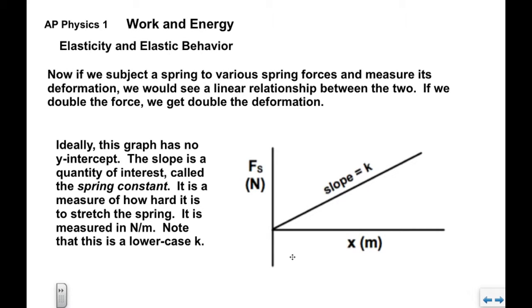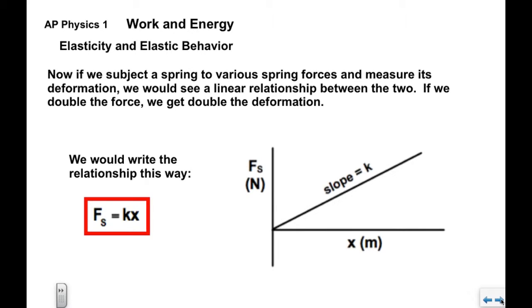The slope of this graph is actually a quantity of interest. It's called the spring constant. It's a measure of effectively how hard it is to stretch the spring. It's measured in newtons per meter, and this spring constant is given the symbol lowercase k. We would write the relationship this way: spring force equals k times x. Again, think in terms of y equals mx plus b. Slope is the k constant.